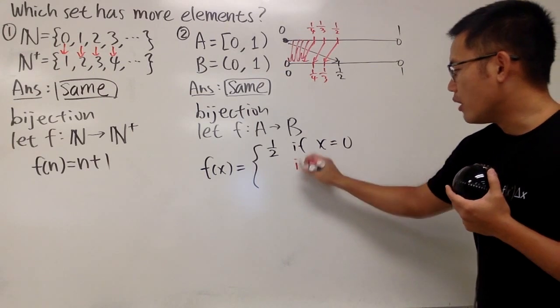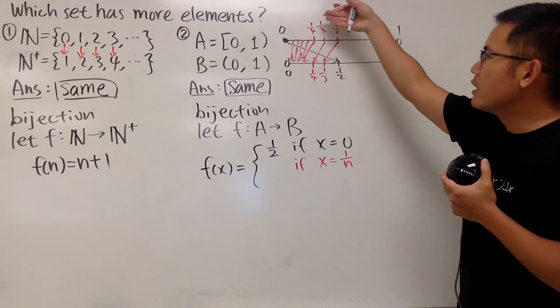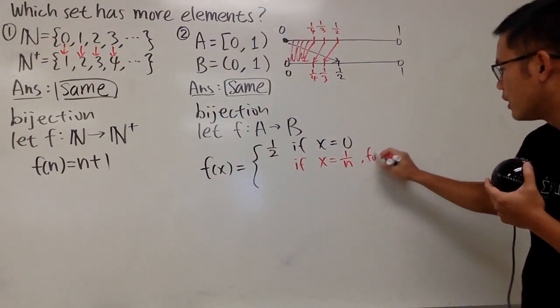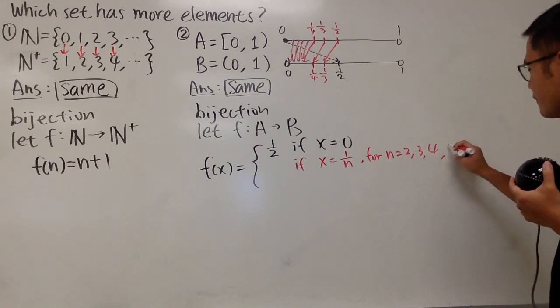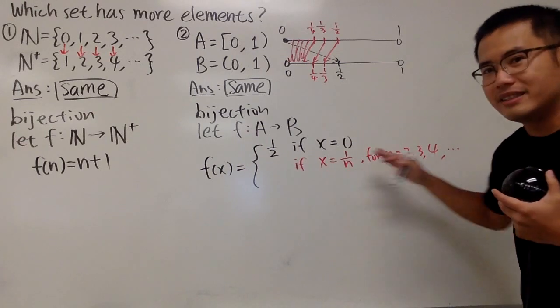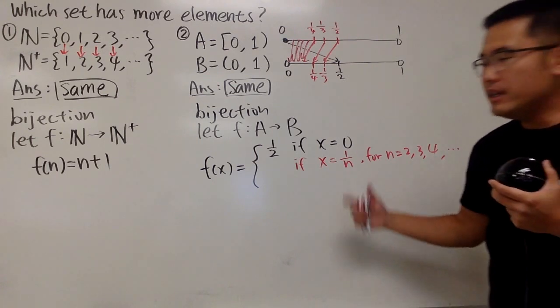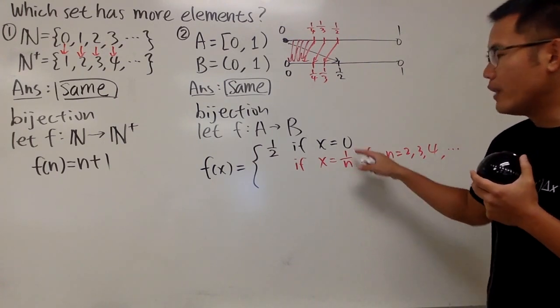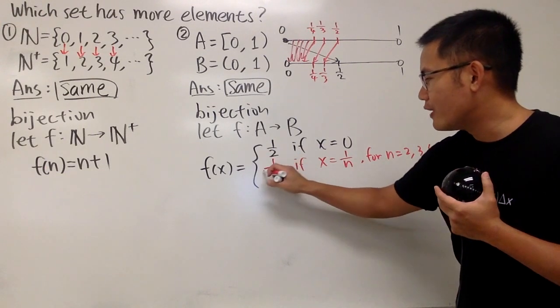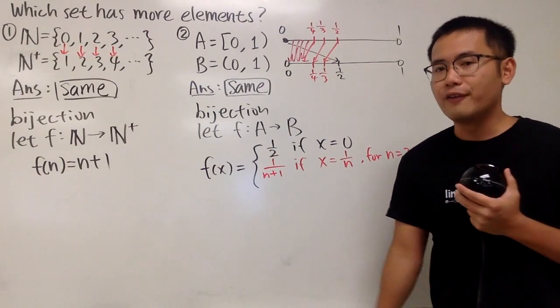Now, here is the deal. If x is in the form of 1 over n, like one-half, one-third, one-fourth, and so on. So I will also have to indicate for n equals 2, 3, 4, 5, 6, 7, and so on. And as you can see, this is the countable part, very similar to the first one. Well, in this case, if x is equal to 1 over n as your input, then the output will have to be 1 over n plus 1. You just add one to the denominator to get to the next fraction.